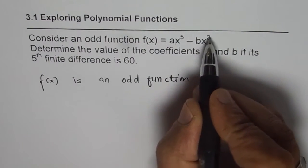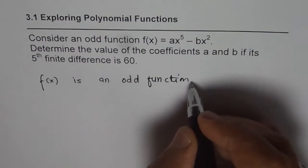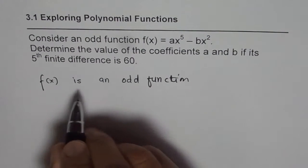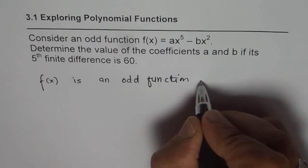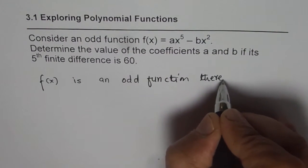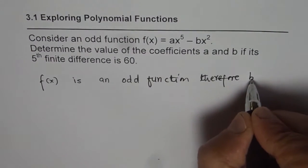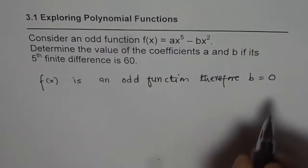Then the term x^2 should not be there. f(x) is an odd function, therefore b should be equal to 0. That is very important.